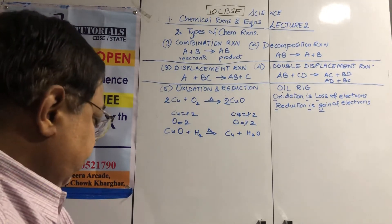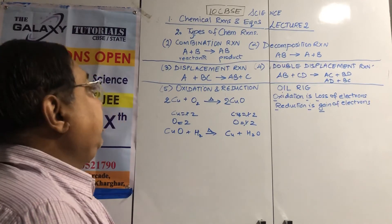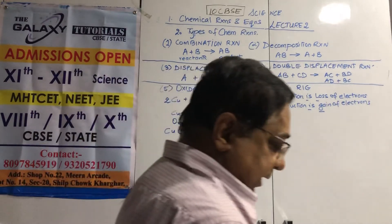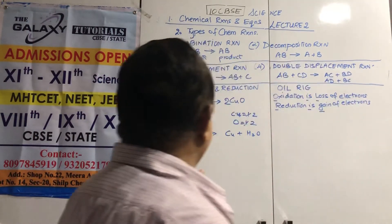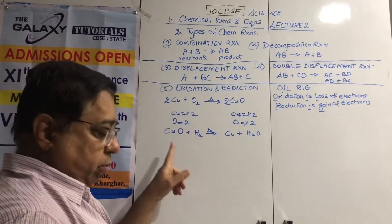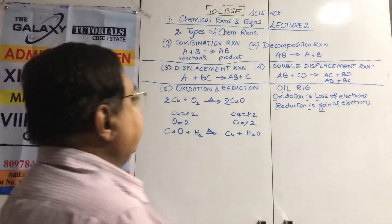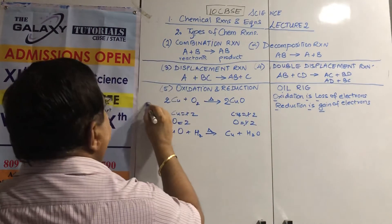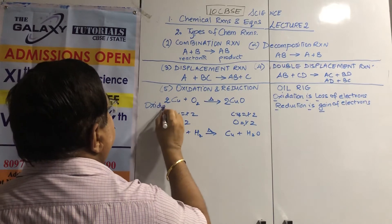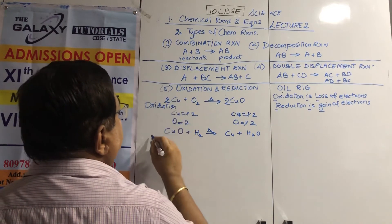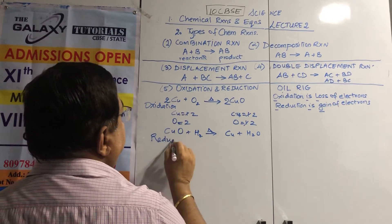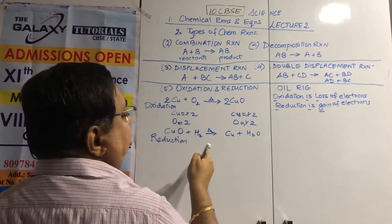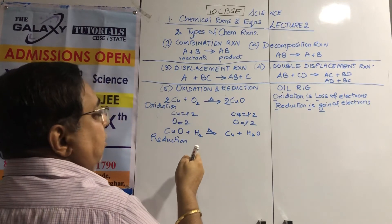If a substance gains oxygen, it is said to be oxidized. If it loses oxygen, it is called reduction. So in CuO + H2 → Cu + H2O: copper oxide loses oxygen — reduction; hydrogen gains oxygen — oxidation. Oxidation and reduction always occur in pairs.